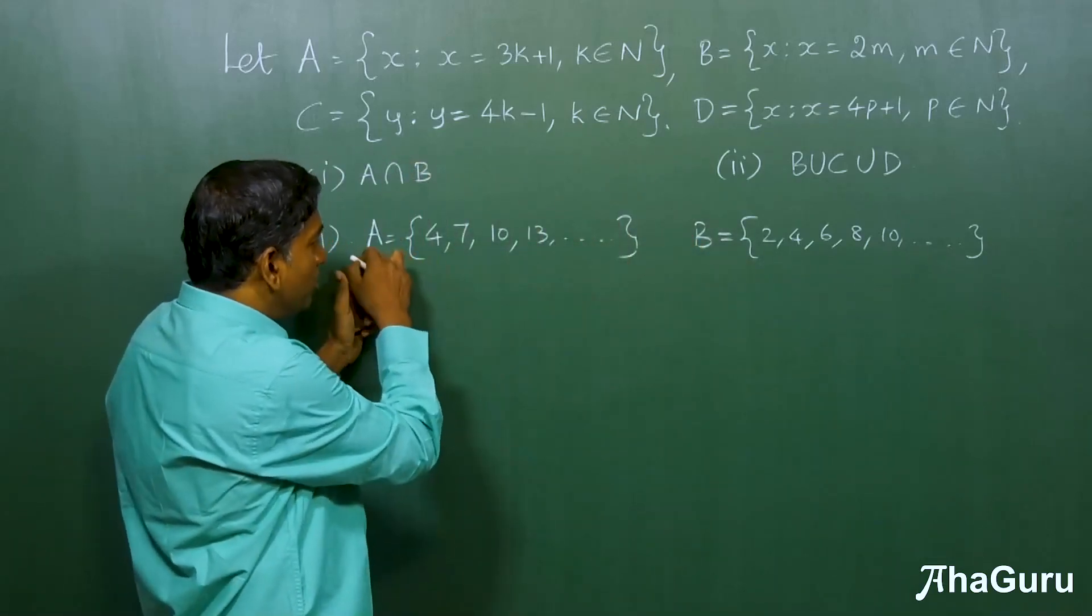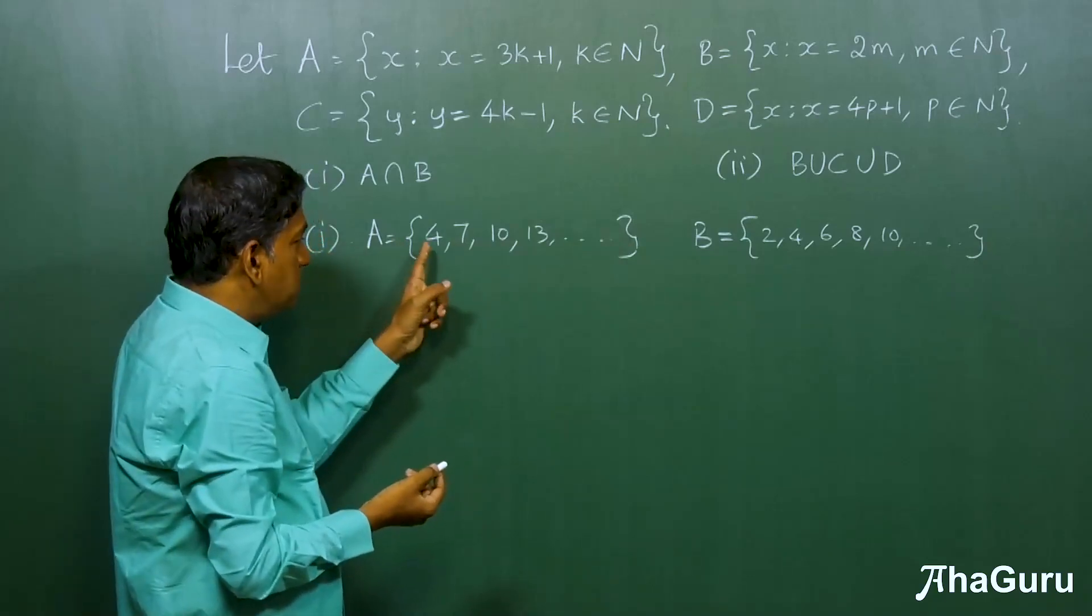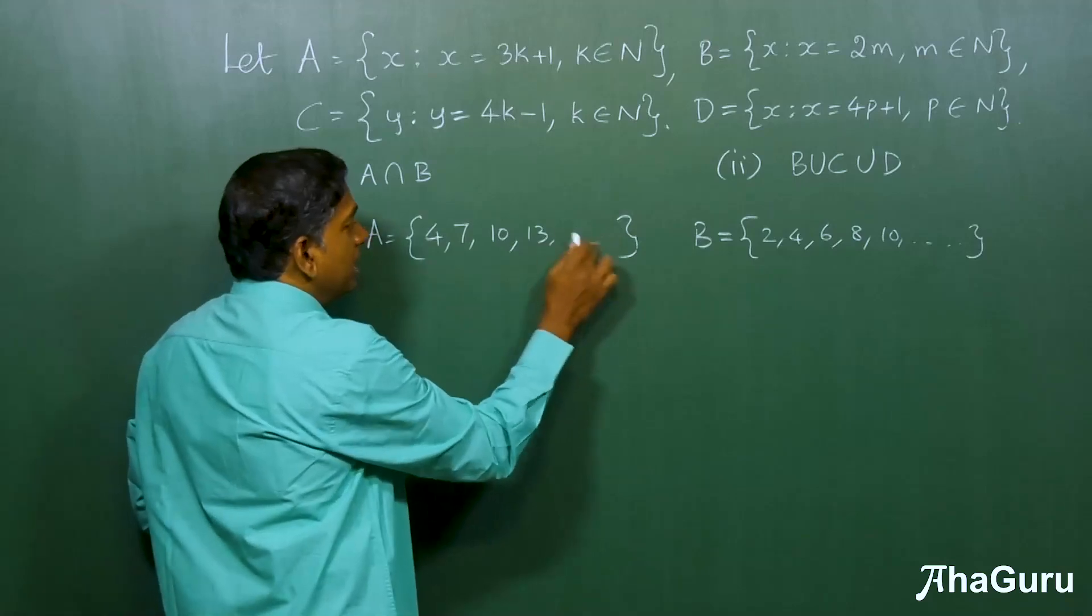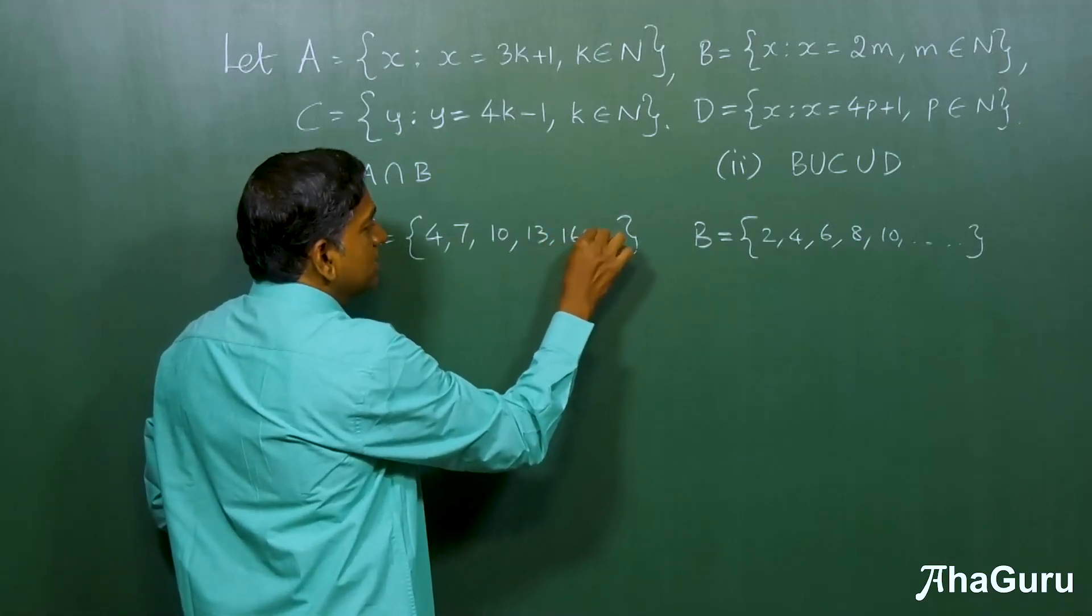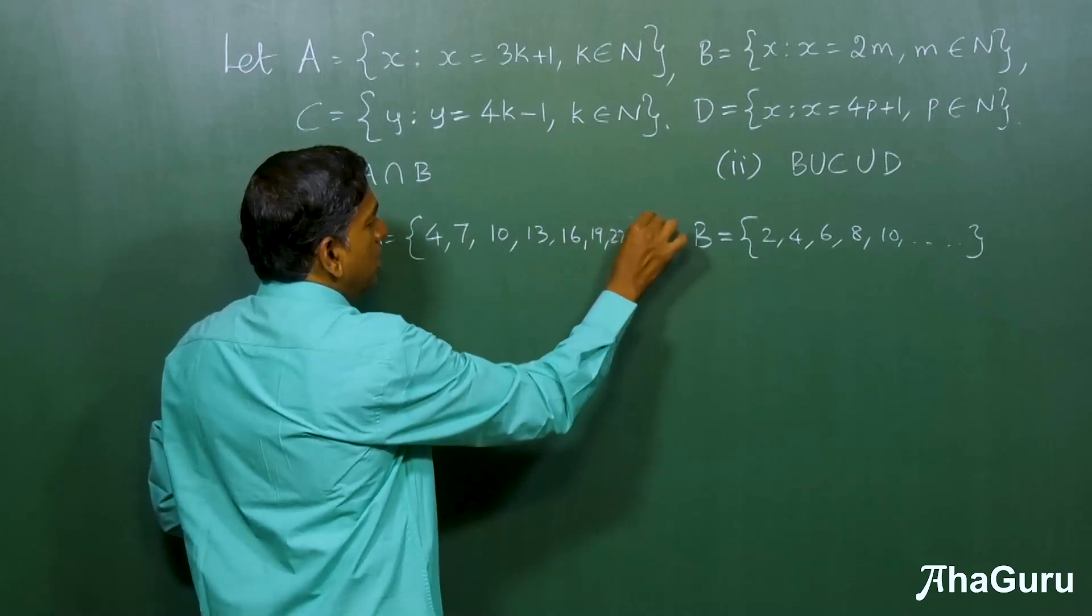Now, but it also has to belong to set A. So, all we can do is we can just pick the even numbers in this set. In fact, if we write the next few, so you will get 16, 19, 22 and dot dot dot.